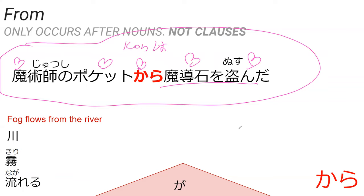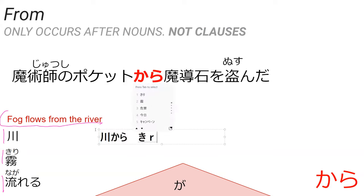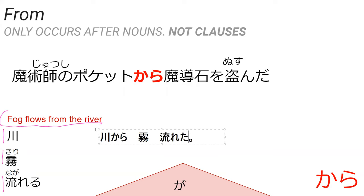So how would you think you would say 'fog flows from the river'? You've got kawa, kiri, and nagareru. — Kawa kara... kiri... nagareta, or nagareru. — Nagareru is 'flows'; nagareta was 'did flow.' You accidentally forgot the particle ga, because that's marking the subject of the sentence.